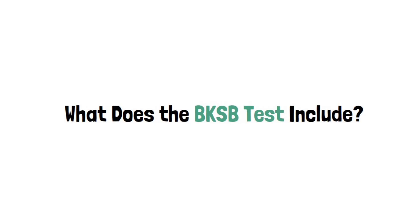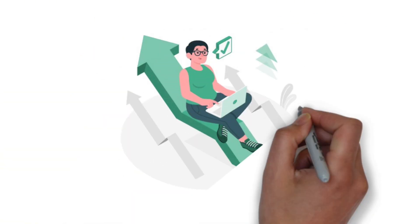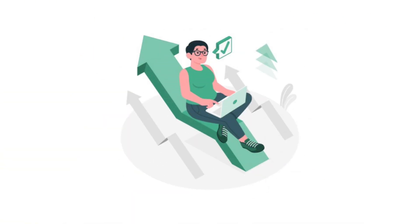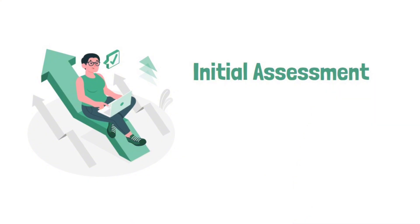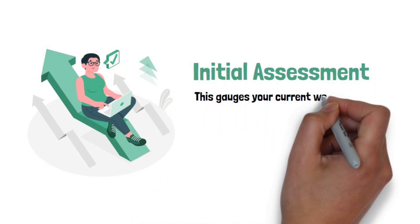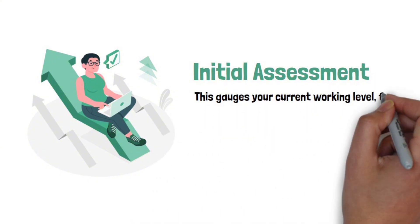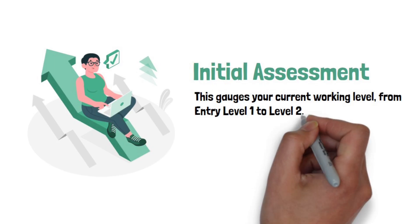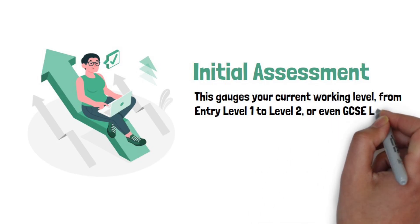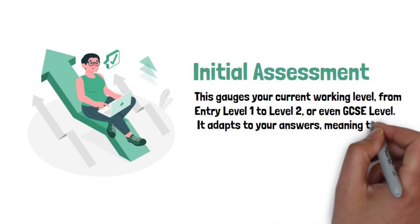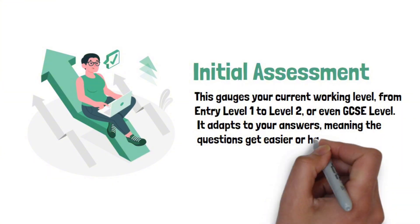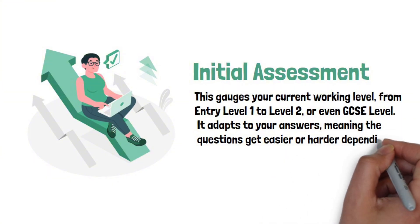What does the BKSB test include? The BKSB is made up of two core assessments. One: Initial Assessment. This gauges your current working level from entry level 1 to level 2, or even GCSE level. It adapts to your answers, meaning the questions get easier or harder depending on how you respond.